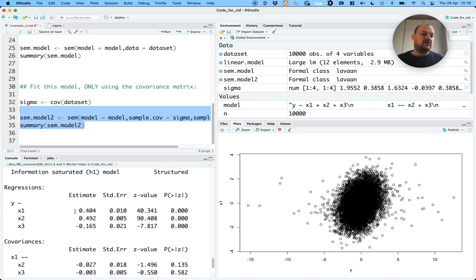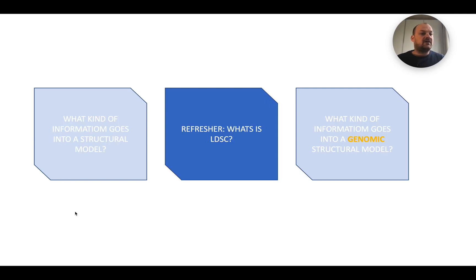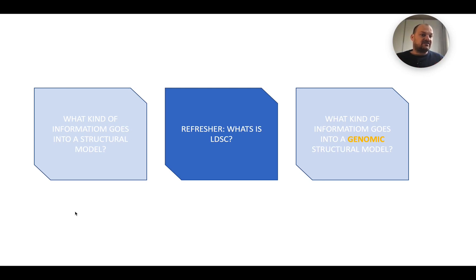We've covered that you can fit a structural equation model based on covariances only — that's a valid input. Now, the input for Genomic SEM is genetic covariance, which we get from GWAS summary data: for each SNP, the effect allele, which of the two alleles is increasing or decreasing the trait, and the Z statistic associated with that allele — the test statistic of the linear regression association in the GWAS. We'll get those genetic covariances and heritabilities using LD score regression.